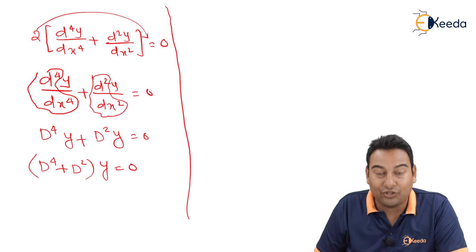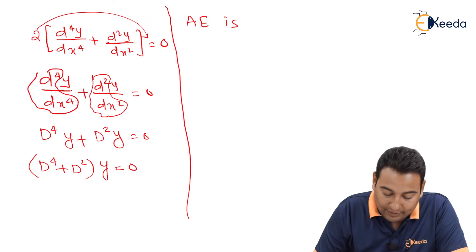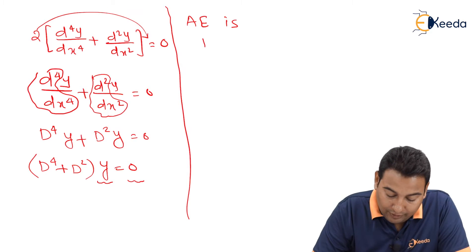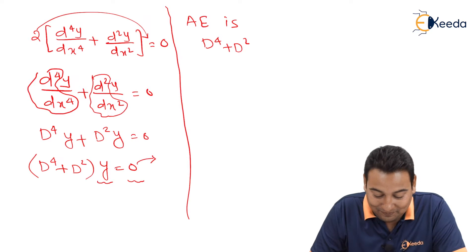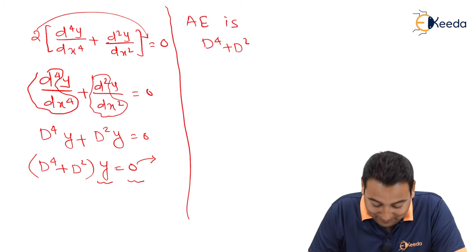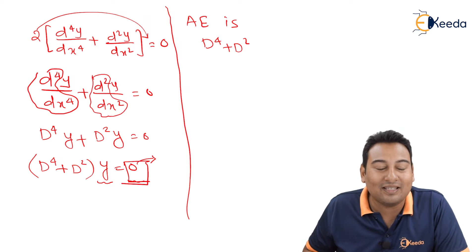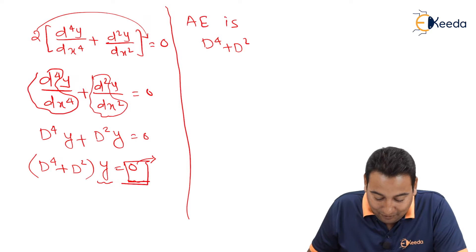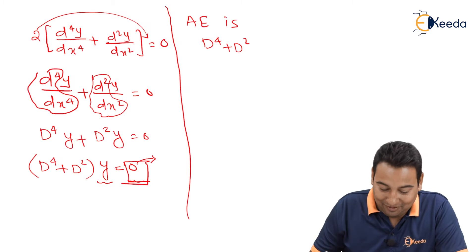We need to find CF, so we need the auxiliary equation. As discussed, we don't consider y. This is D⁴ plus D². The RHS term is zero, which means there is no PI — PI is zero. Therefore the solution is CF only; we just need to find CF.